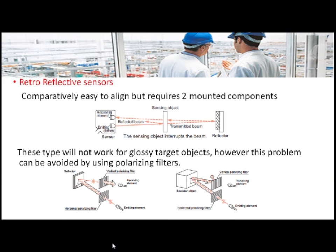The next type is retro reflective type optical sensor. Compared to through beam type, it consists of a single module that houses both the emitting and receiving elements. It also consists of a reflector used for reflecting the light in the absence of the object. However, the problem with this type is that whenever a glossy or shiny target is present, it itself will act as a reflector and send a wrong signal to the receiving element.